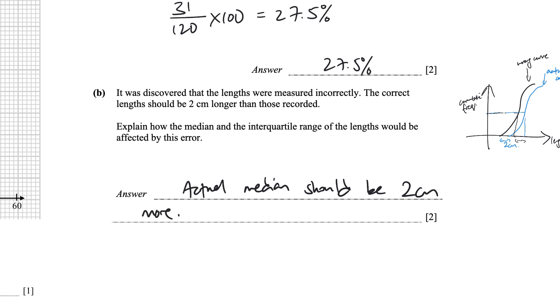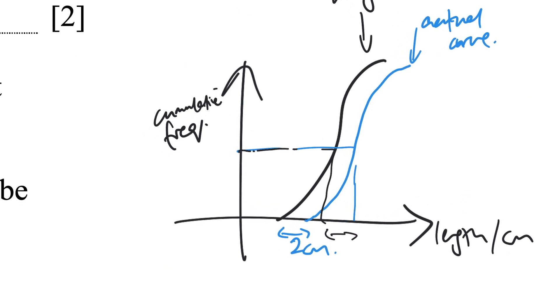And then interquartile range. Actually interquartile range you can see there's no change. Because over here. Your upper quartile and your lower quartile.